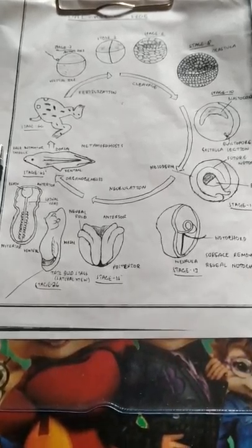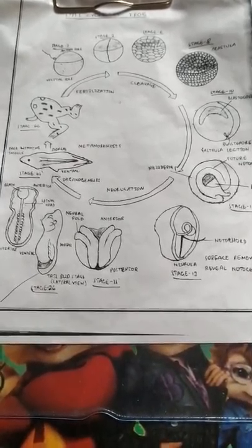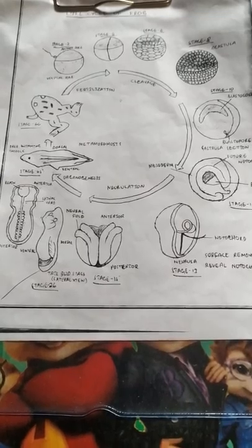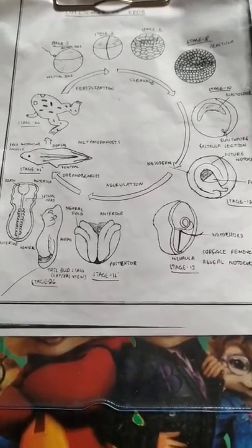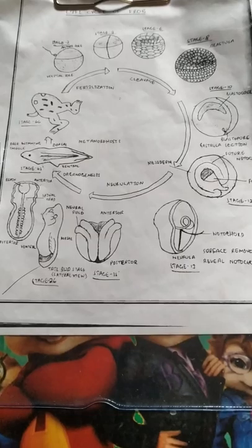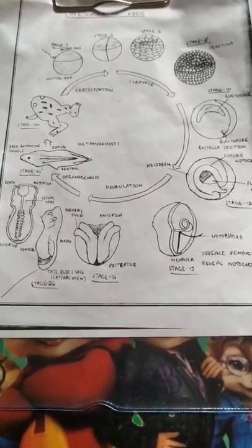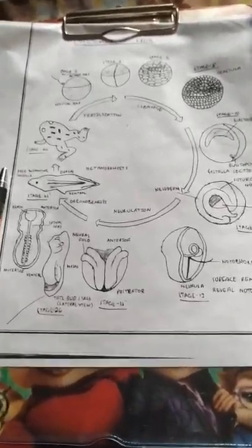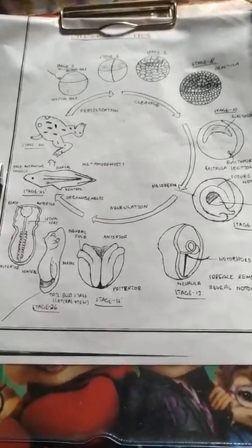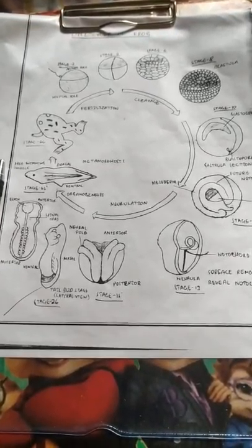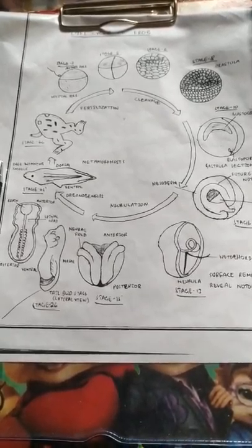Welcome to Ashris Biology. In this video I'm going to explain the life cycle of frog. The life cycle of frog involves two stages: first, the pre-embryonic stage, and second, the post-embryonic stage. The pre-embryonic stage has three stages: fertilization, cleavage, and neurulation. The post-embryonic stage has metamorphosis.